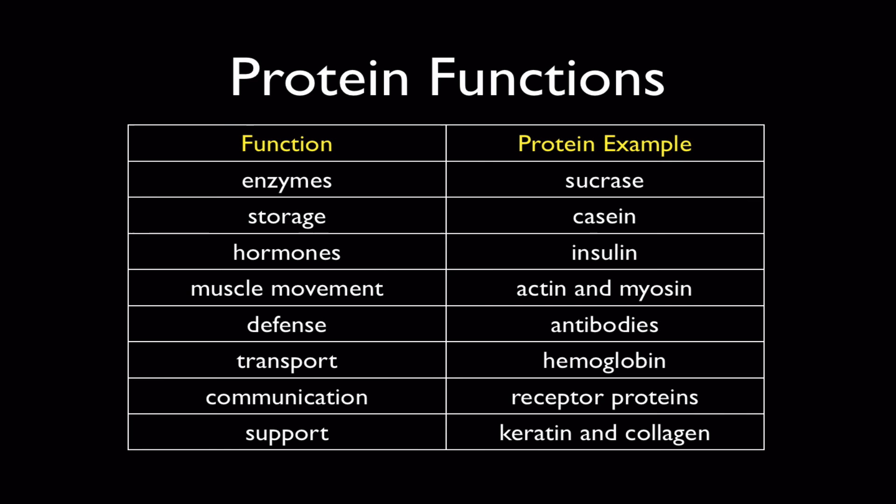This table here is a very quick summary of the diversity of functions that proteins have. Proteins function as enzymes, for example, sucrase. We've already talked about sucrase. Sucrase is the enzyme that breaks sucrose up into glucose and fructose. Many proteins also function as storage molecules like casein. Casein is the protein in milk. If you take some milk and heat it up in a pan, you'll see it'll form that skin on the top. That's the casein being denatured and forming that pretty tough skin on the top.